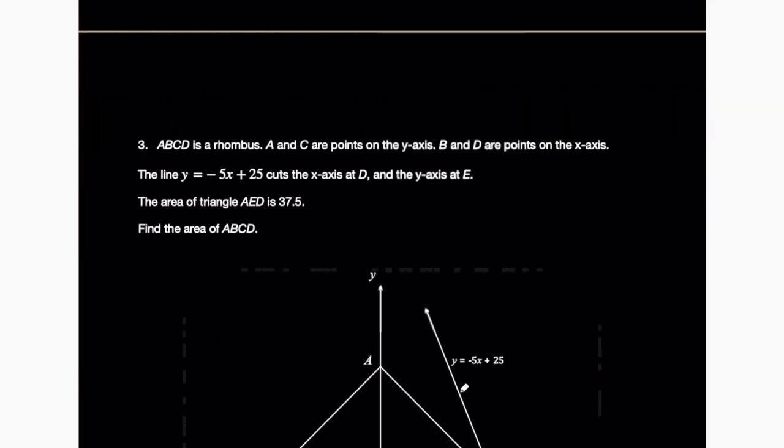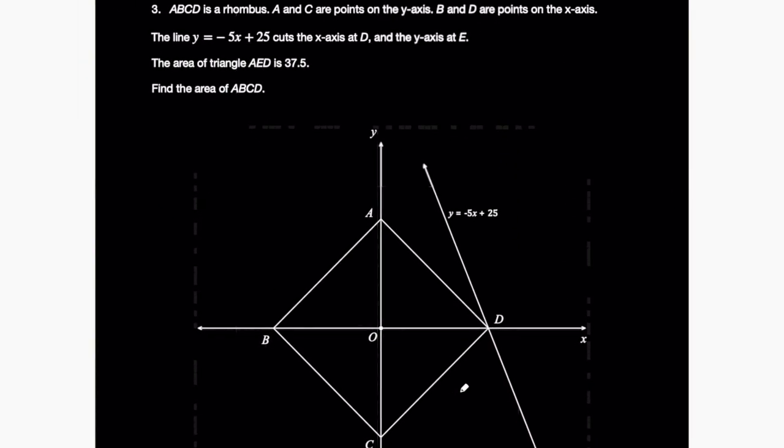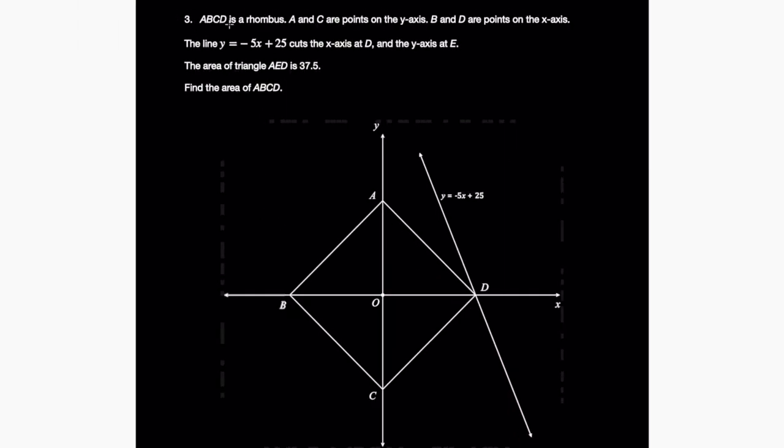On to the problem I posted on my YouTube. This problem says ABCD is a rhombus. A and C are points on the Y axis. B and D are points on the X axis. The line Y equals negative 5X plus 25 cuts the X axis at D and the Y axis at E. The area of triangle AOD is 37.5. Find the area of ABCD.